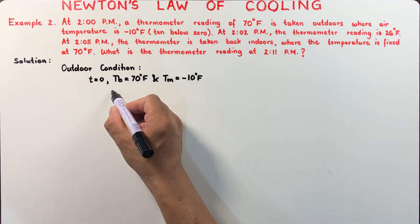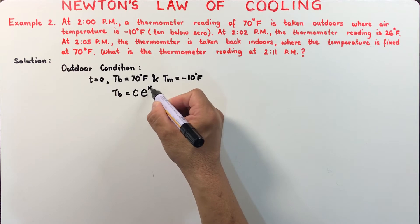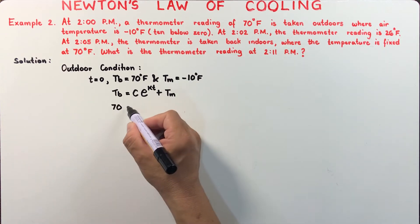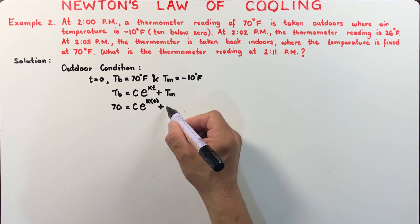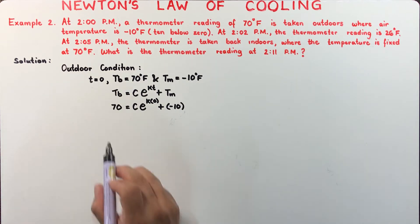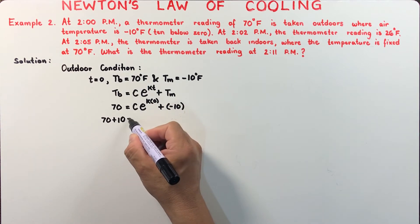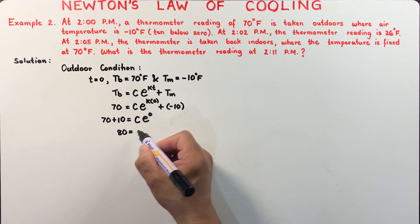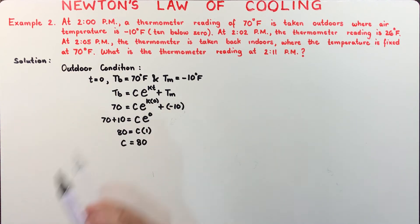To solve this, we consider the outdoor condition first. At the start, T equals zero, the thermometer reading is 70 degrees Fahrenheit and the outdoor air temperature is negative 10 degrees Fahrenheit. Substituting into the formula: 70 equals C times e to the power K times 0, plus negative 10. Adding 10 to both sides gives 80 equals C times e to the power 0, which equals C times 1. Therefore C equals 80.